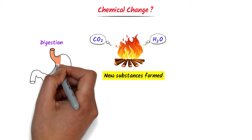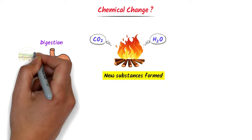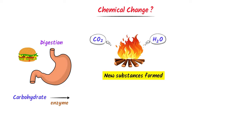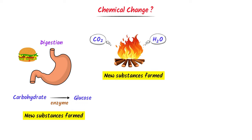Secondly, consider the digestion process. When you eat carbohydrates, the enzymes in your intestine convert these carbohydrates into glucose. A new substance is formed — glucose is formed from the carbohydrates. So digestion is an example of a chemical change.